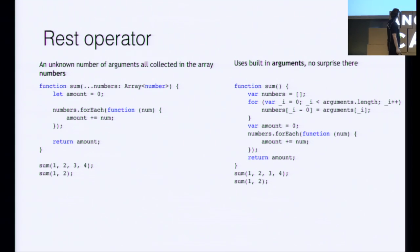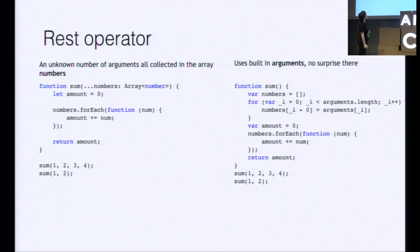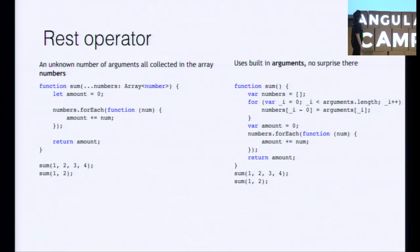The REST operator is a cool construct. Here we have a number of arguments where we don't know beforehand how many there will be. We can call this method with four arguments or with two. The REST operator uses the dot-dot-dot syntax followed by a variable name, and it's of type array. In this case, we have a sum function that takes all the parameters and sums them up. If you look at the ES5 transpiled version on the right, it's using the ES5 built-in arguments object.